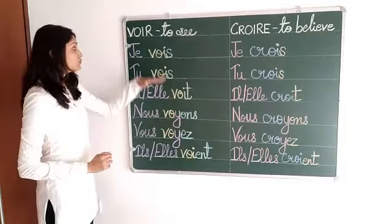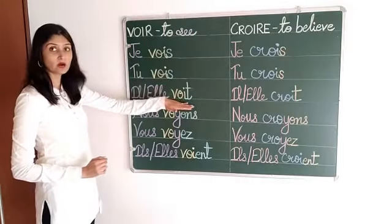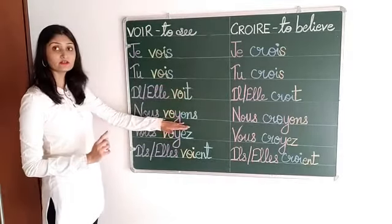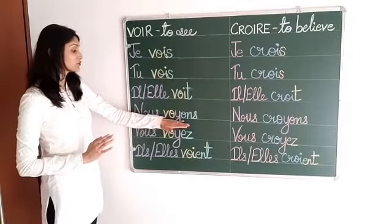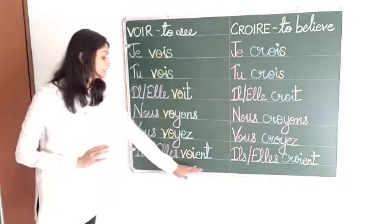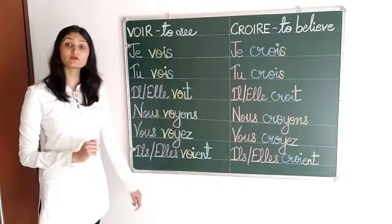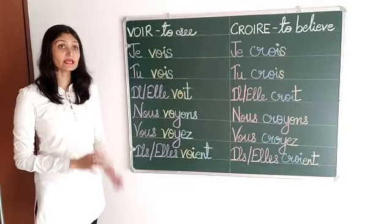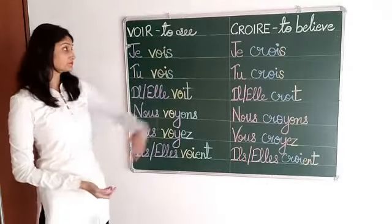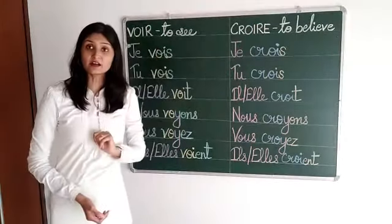In NOUS and VOUS forms, the I will be changed into Y, giving V-O-Y. And again in the ILS and ELLES plural form it will become V-O-I. Similarly for verb CROIRE, you are going to remove R-E, so the radical will become C-R-O-I.